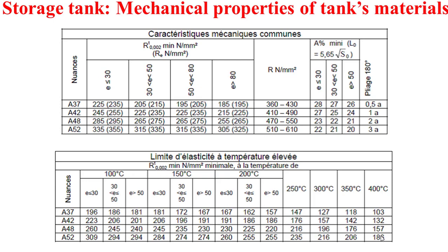For the mechanical properties of tanks, these can be obtained from any standards handling mechanical properties. The tables shown in this slide are obtained from French standards. For several steel grades such as A37, A42, A48, and A52, we can obtain the ultimate tensile strength R, as well as the yield strength RT for several temperatures and thickness ranges.